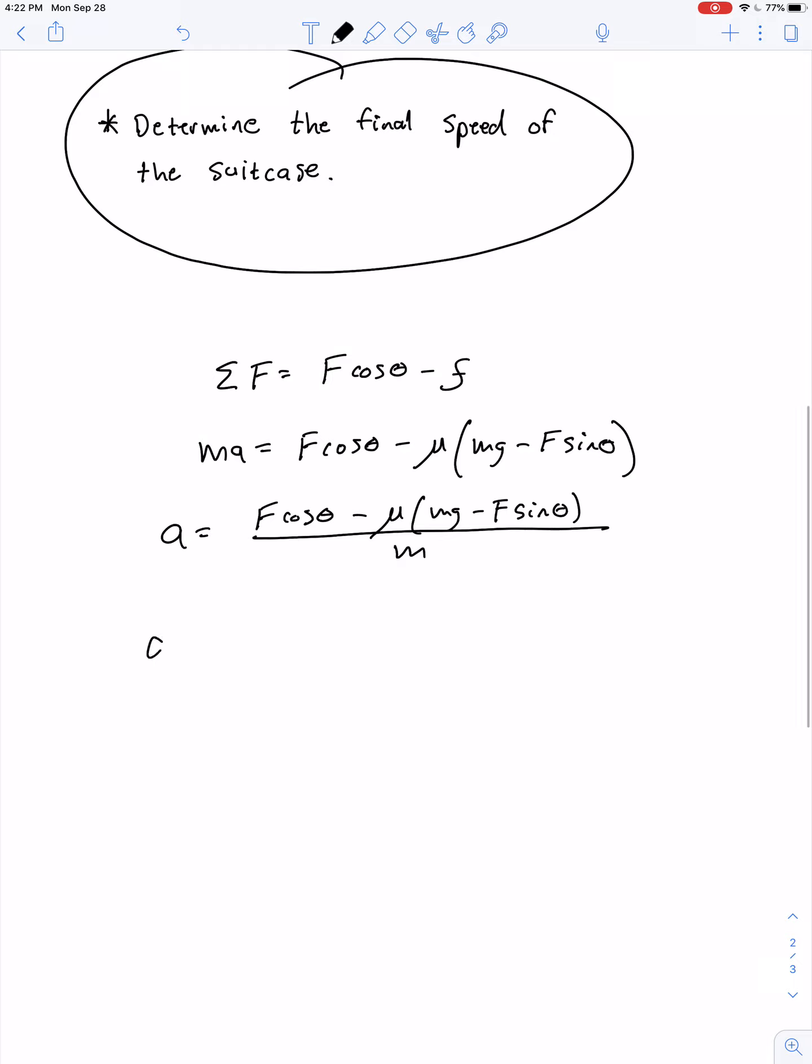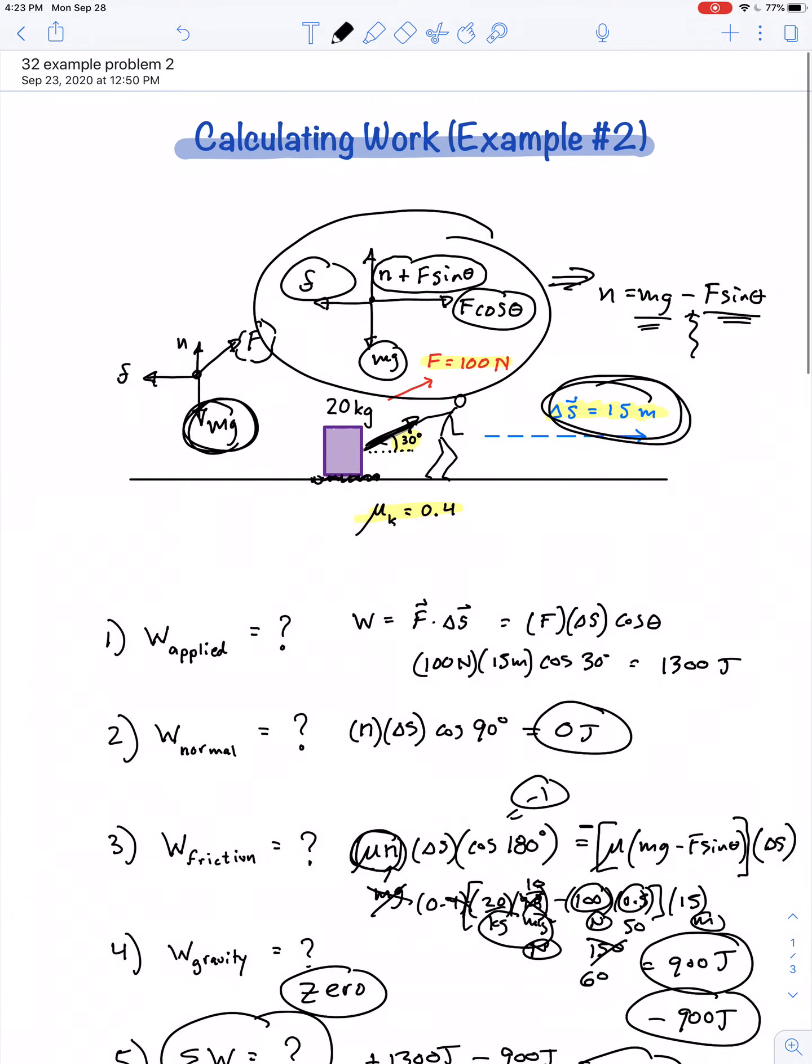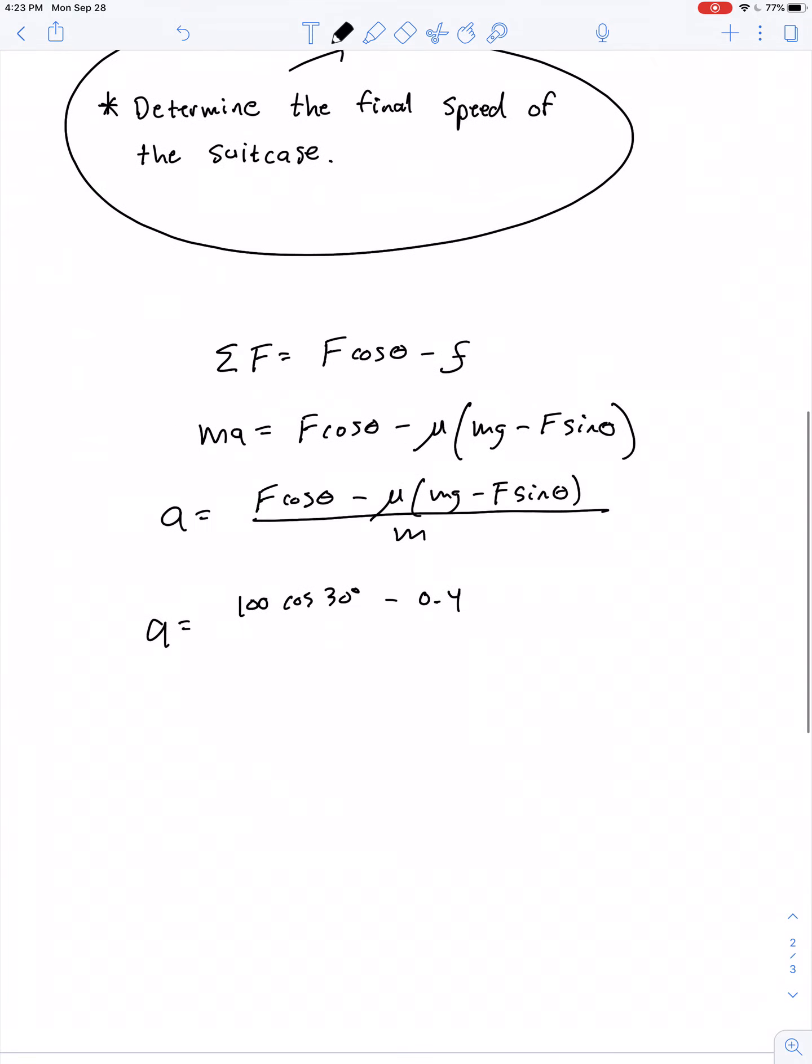So our acceleration is F cosine theta minus mu times mg minus F sine theta, all divided by M. Let's plug in the numerical values. So A is 100 times the cosine of 30 degrees minus 0.4 times 20 times 10 minus 100 times 0.5, all divided by 20. I believe cosine of 30 is 0.866.